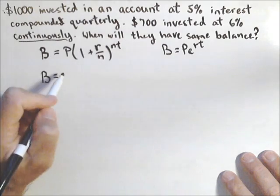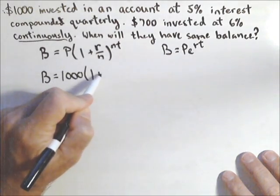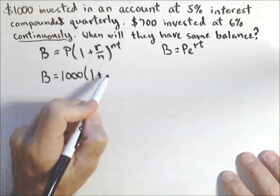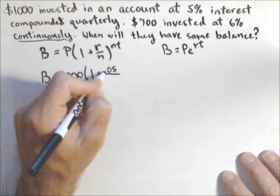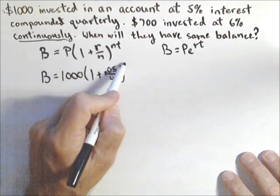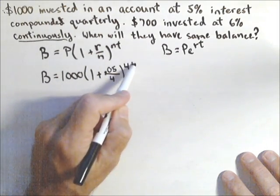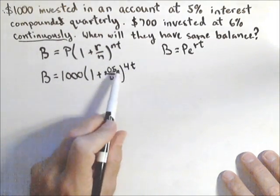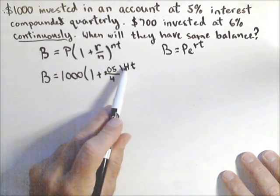Let's start with the first account, the one that starts at $1,000. That's the principal, times one plus the rate—don't forget to convert it to a decimal—so 0.05 over the number of compounding periods, which is four because it's quarterly, raised to the 4T. Whenever you're compounded more than once per year, remember to put the number of compounding periods both underneath the rate and up with the exponent.